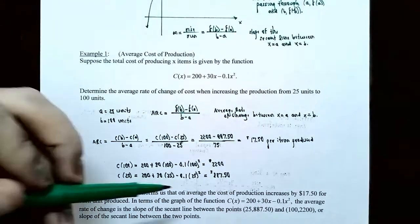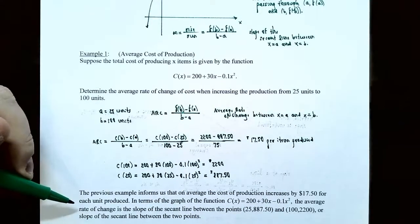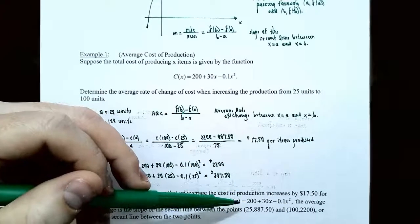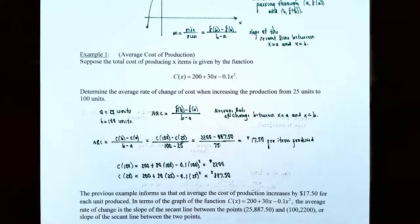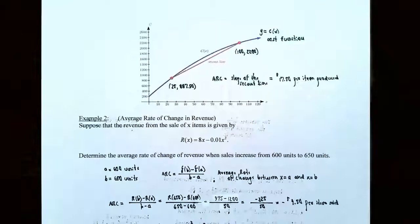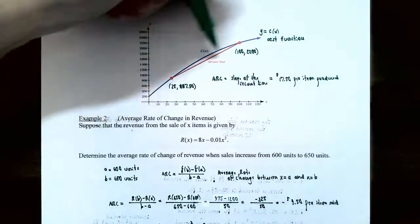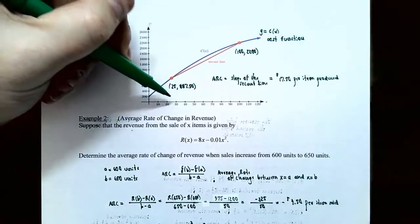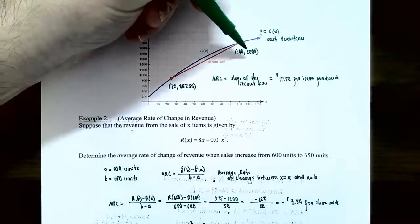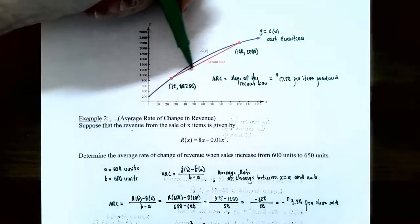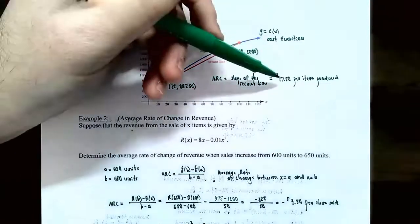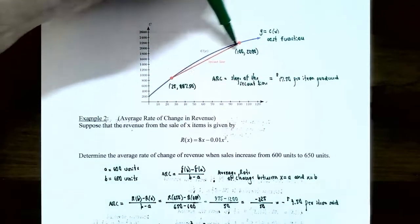The average cost of production increases $17.50 for each unit produced. The cost function is a quadratic, so the graph is a parabola: c of x equals 200 plus 30x minus 0.1x squared. The average rate of change is the slope of the secant line connecting the two points at 25 units and $887.50, and 100 units and $2,200. On the graph, we connect these two points with the secant line, and its slope — $17.50 per item — is the average rate of change.